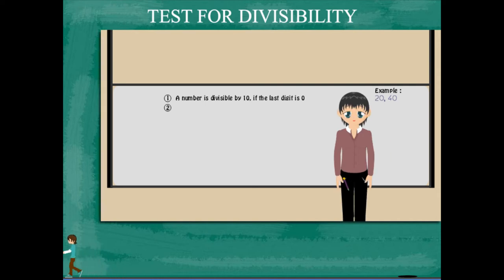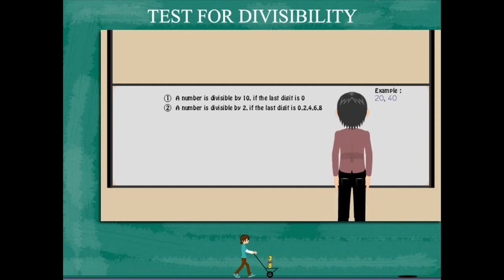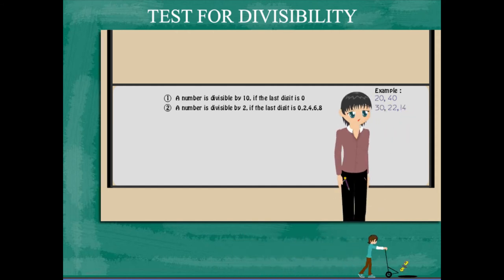The next rule is that a number is divisible by 2 if its last digit is 0, 2, 4, 6, or 8. Examples are 30, 22, 14, etc.